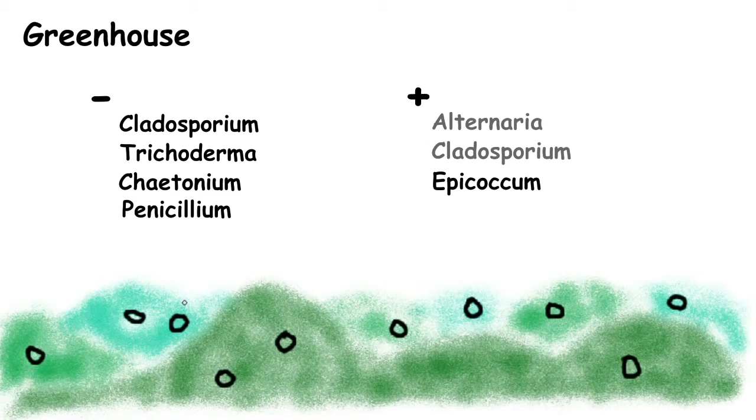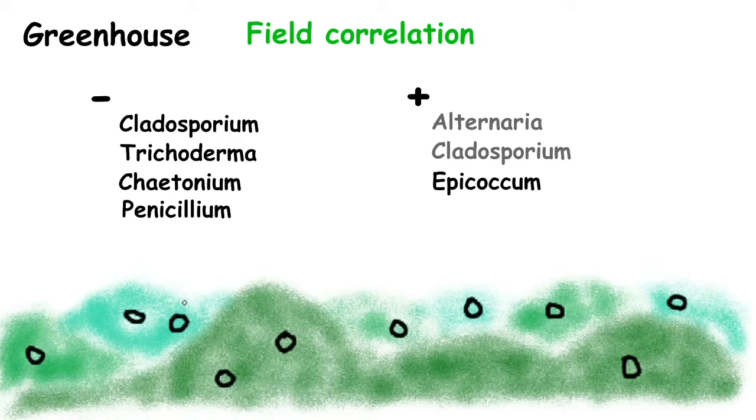Most of these fungi increased or decreased plant disease symptoms in greenhouse experiments. Disease severity in the wild tree populations correlated with the occurrence of several fungi in accordance with their effects from the greenhouse experiment.